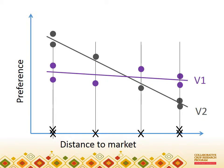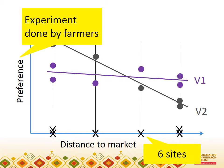So I might end up choosing to use six sites, as shown. The fact that I am measuring farmer preferences means that this needs to be an experiment done with close farmer involvement, by farmers in farmers' fields at each site.